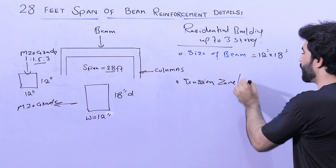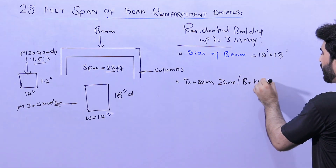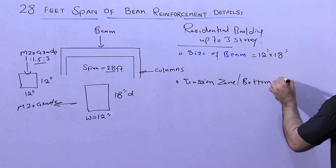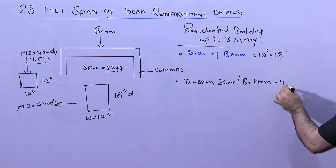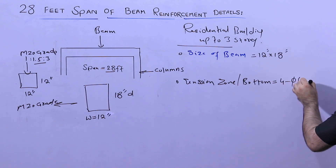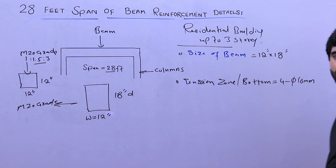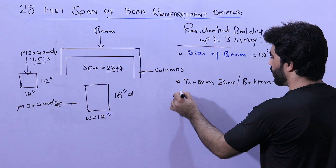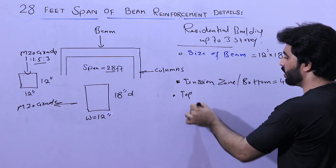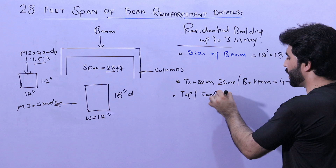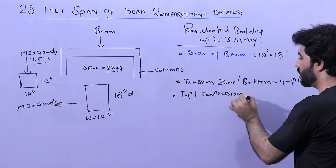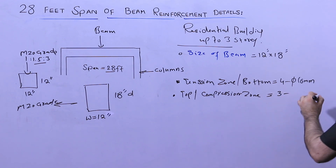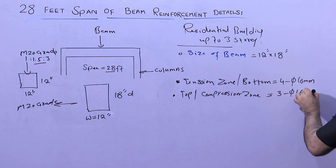Now let me guide you for steel reinforcement. At the tension zone — that is, at the bottom of this beam — we use 4 bars with a diameter of 16 mm. At the top portion, which is the compression zone, we provide 3 bars with a diameter of 16 mm.